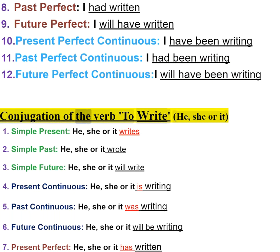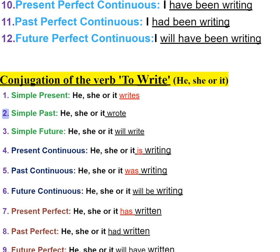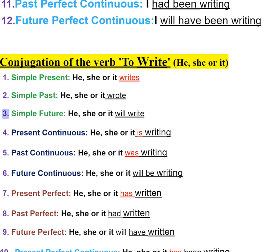Conjugation of the verb to write. He, she, or it. One: simple present — he, she, or it writes. Two: simple past — he, she, or it wrote. Three: simple future — he, she, or it will write.